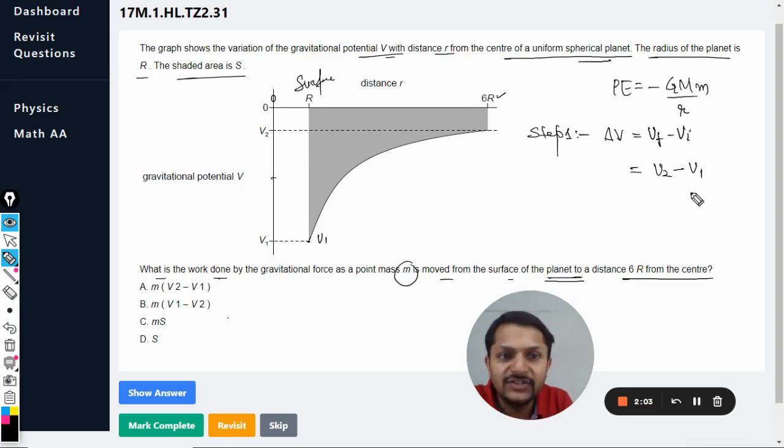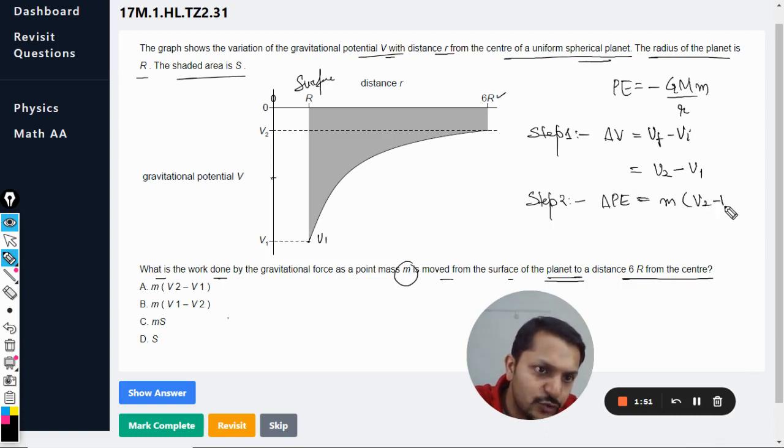We are not concerned with the negative value or something. We will substitute it when the values are given. We can just write V2 minus V1. This is the potential. Step number two is the potential energy, so change in potential energy is when you multiply the mass with V2 minus V1.